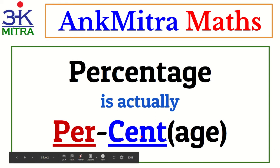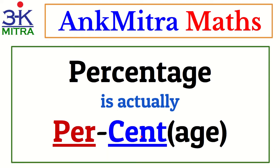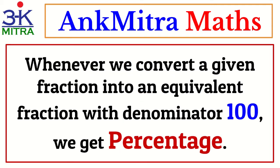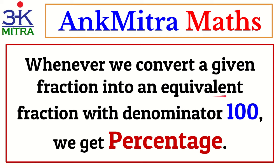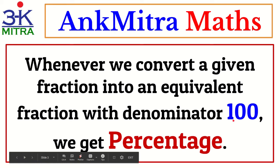So you convert any given fraction to something like per hundred — with a denominator of hundred — and you get the percent value of the given fraction. Whenever we convert a given fraction into an equivalent fraction with denominator hundred, we get the percentage. This is the basic logic behind percentage.